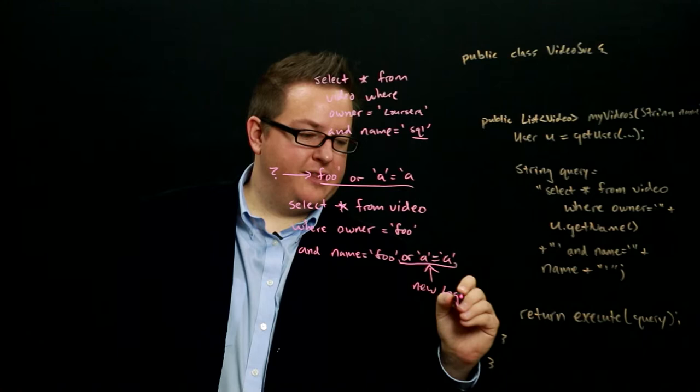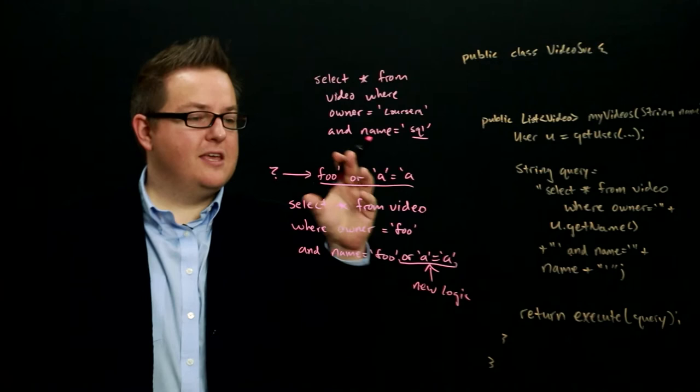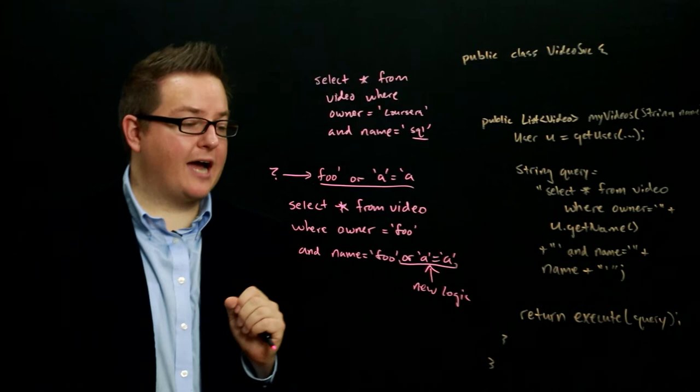And this is suddenly a serious problem because the designer of this query that's being built up in the string is assuming that the only logic that's being executed is the select from video where owner equals and name equals. They were not assuming that any additional logic could be tacked on to the end of this query.